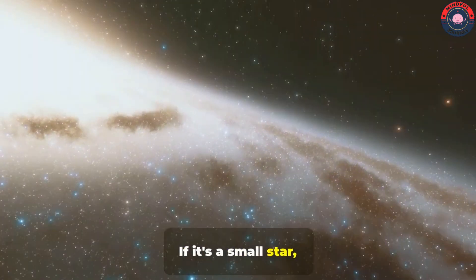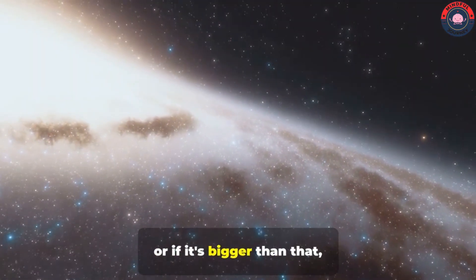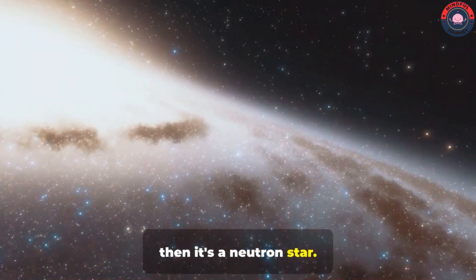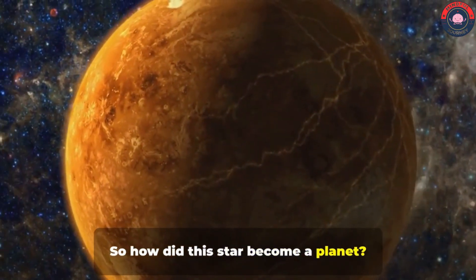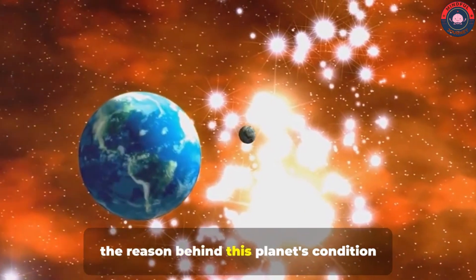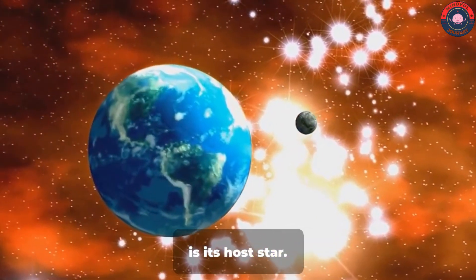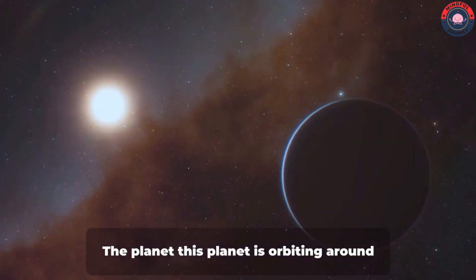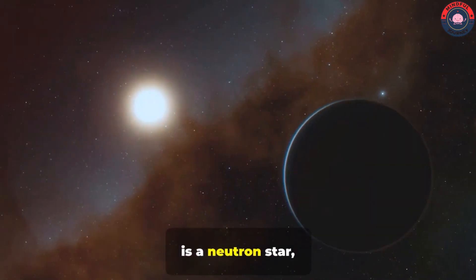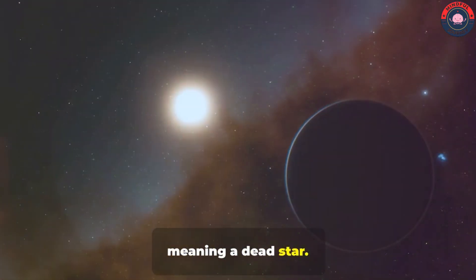If it's a small star, then it's a white dwarf. Or if it's bigger than that, then it's a neutron star. So, how did this star become a planet? Well, the reason behind this planet's condition is its host star. The planet this planet is orbiting around is a neutron star, meaning a dead star.